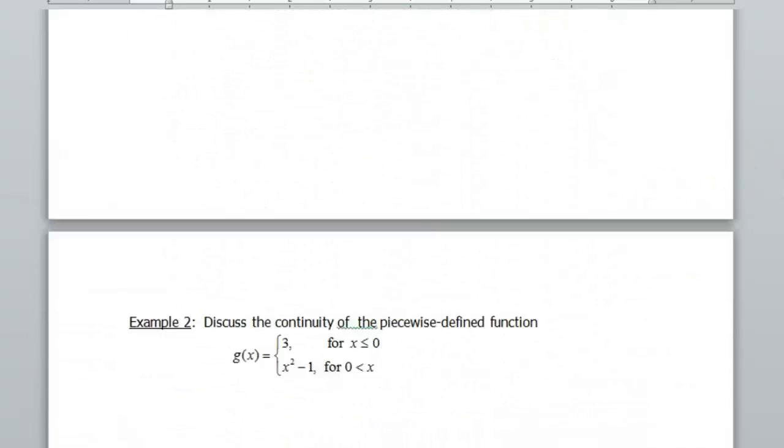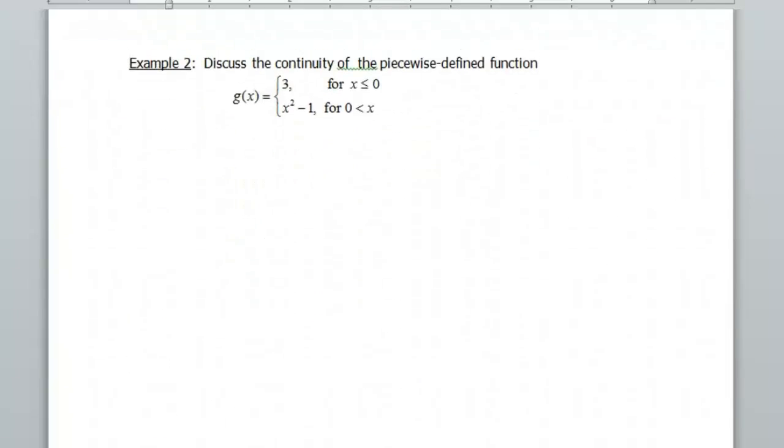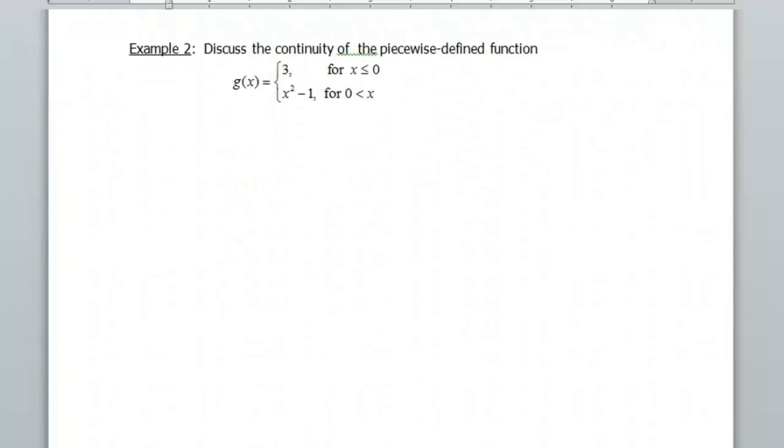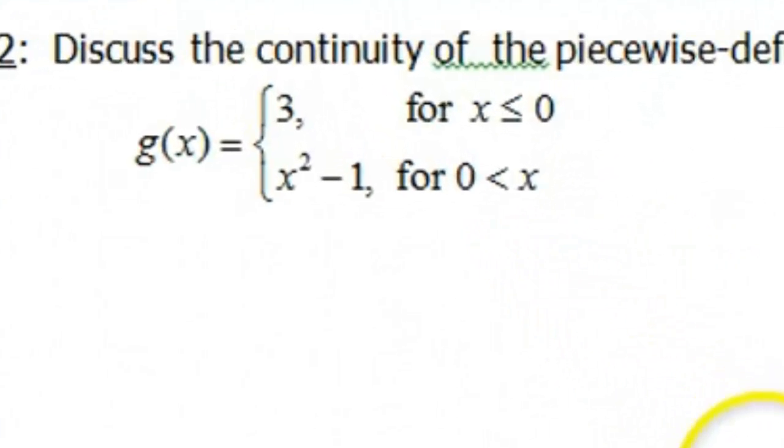Okay, so now that we've looked at a graph, let's take a look at a piecewise function for those of you who are more algebraically inclined. So for this one, I define the function g(x) to be the function 3 if x is less than or equal to 0, and I define the function to be x squared minus 1 if 0 is less than x. This is the same thing as saying x is greater than 0.